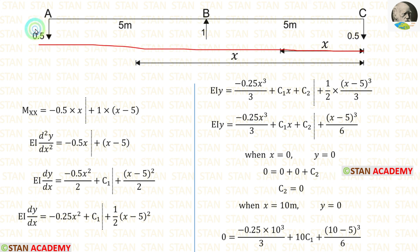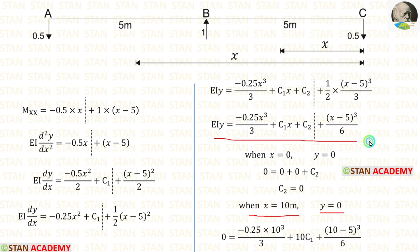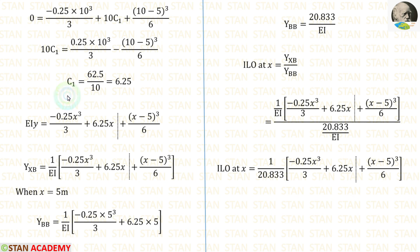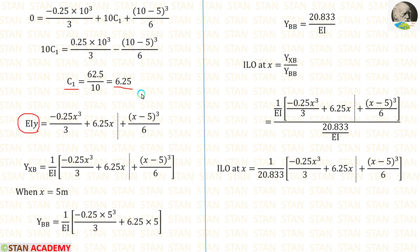When X equals 10 meters, we are at support A, where the deflection is also 0. So when X=10, Y=0. Now we consider the whole equation because we are moving beyond 5 meters. Applying X=10 and Y=0, after the calculations we get C1 equal to 6.25. In the EIY formula, applying C1=6.25 and C2=0, after applying we get the resulting equation.